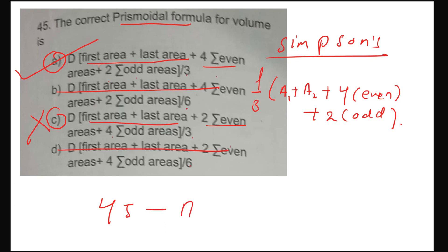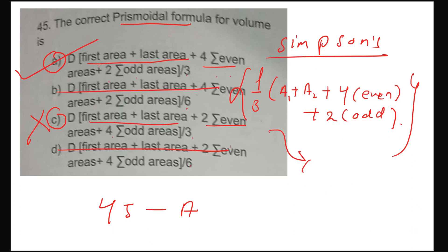Keep the Simpson's rule formula clearly in mind — numericals will also appear. We also covered the trapezoidal rule, Simpson's rule, and prismoidal rule. With this I am ending this part here. There are still 55 more questions to cover, which we will cover in the next part. Okay, all the best!